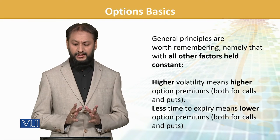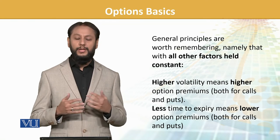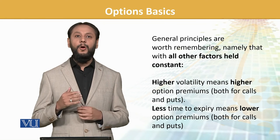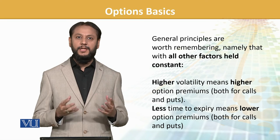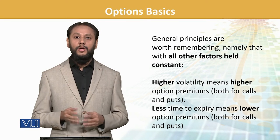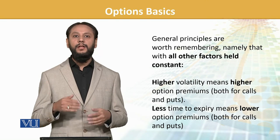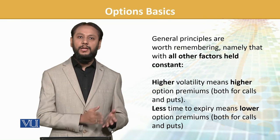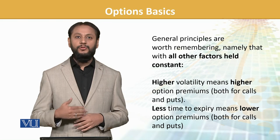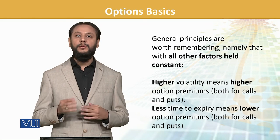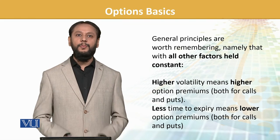The general principle to remember is that if all other factors are held constant, higher volatility means a higher option premium — the gain potential is greater and the coverage is more, so the premium is higher. Similarly, if time to expiry is less, the option premium will also be less. That is, all else remaining the same, a one-month option will have less value than a three-month option. We have a lot more to discuss on these topics, so make sure you build a good base so we can understand the strategies to come. Thank you.